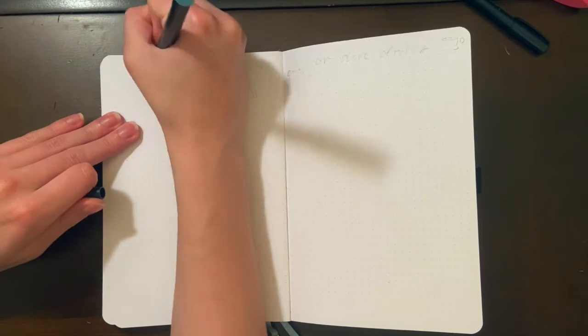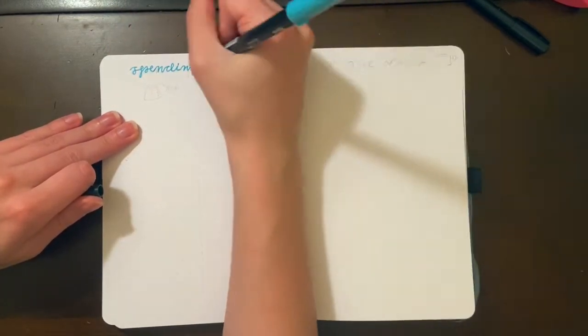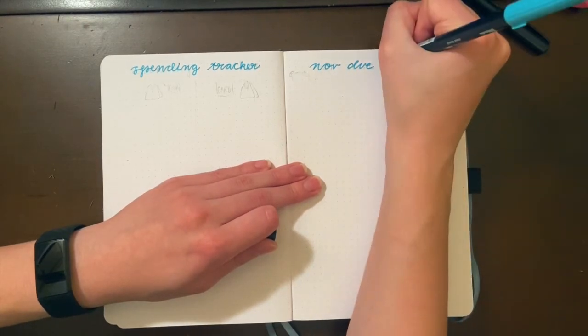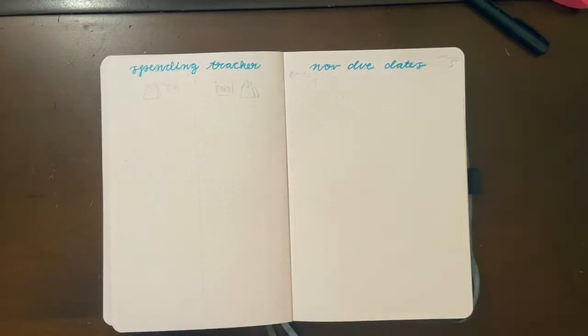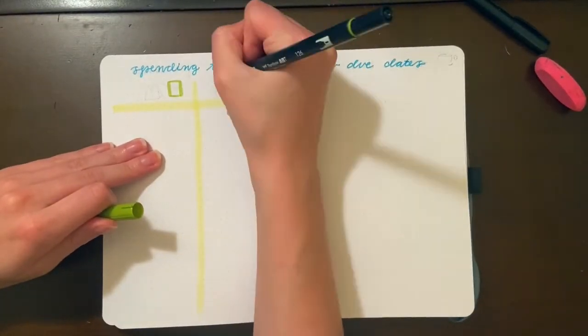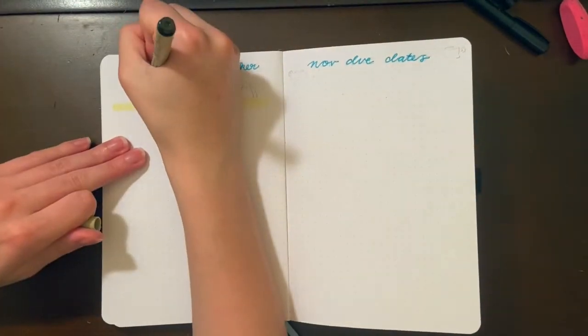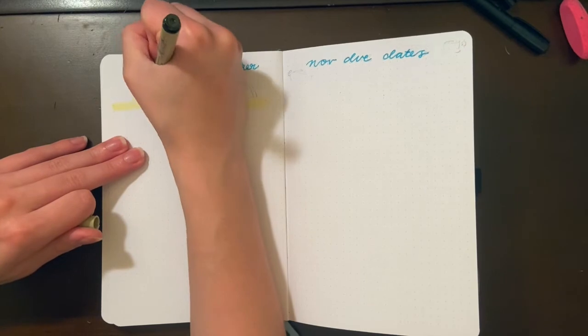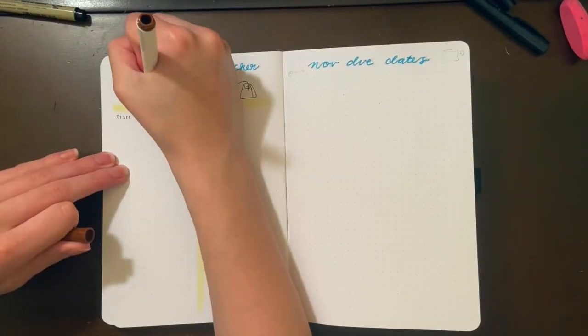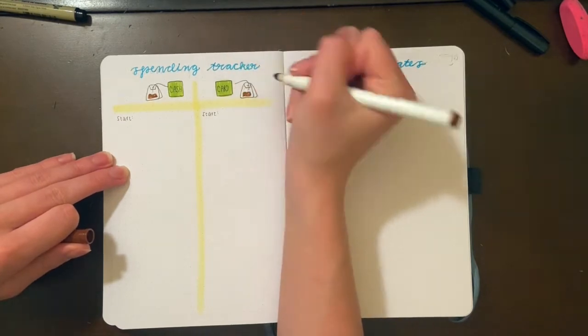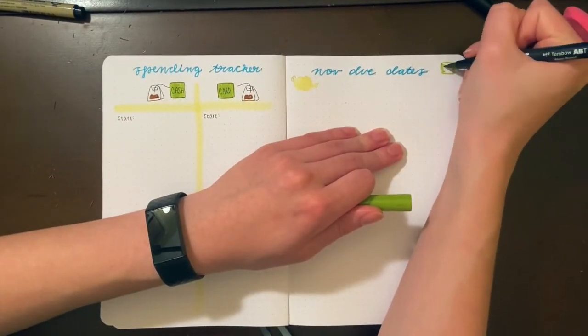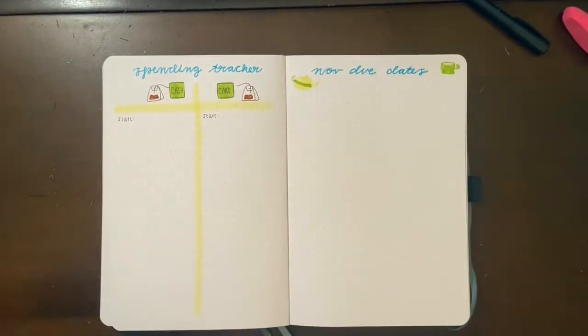My next two spreads are my pretty cut and dry spending tracker and due date spread. These are usually pretty simple, but I think I did something cute with the spending tracker doodles. For my cash and card labels, I drew two tea bags and I made the labels pretty big and labeled them cash and card.